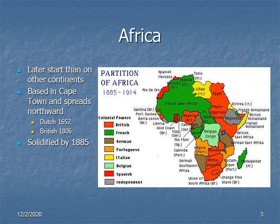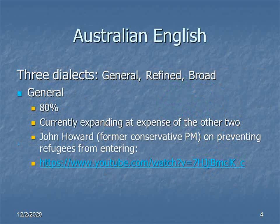I will come back to this a little bit when we spend some time on South Africa in our first lecture next week. As for Australia itself, there are three dialects broadly speaking: general, refined, and broad. The general dialect is spoken by about 80% of the population and is currently expanding at the expense of the other two.